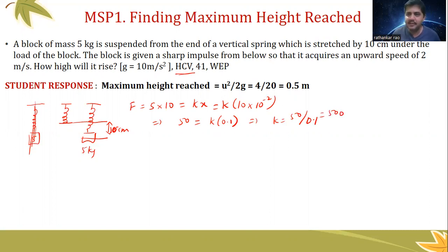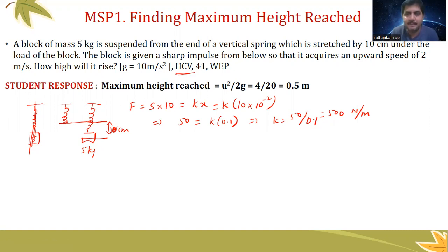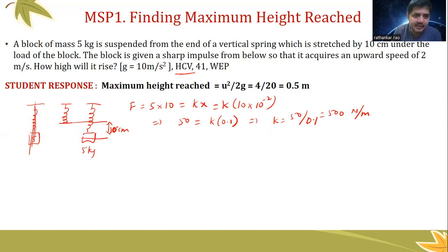So far I have not actually started the problem completely — I've only read part of it. This is a technique everyone should know: when you read a problem, as you get data, try to find out what can be derived. He hasn't asked for k anywhere, but I found it anyway — maybe it will be useful. Let us see. 'The block is given a sharp impulse from below' — so it's already hanging with extension, and I give it a push upward.